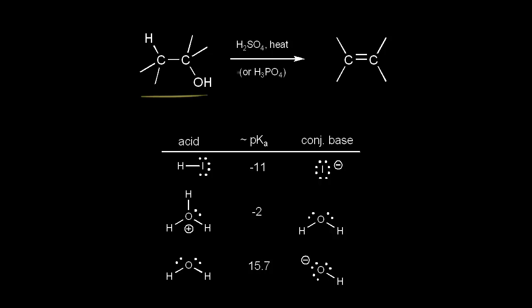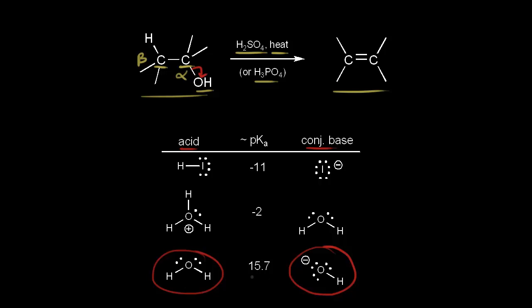Alcohols can also react via an E1 mechanism. The carbon bonded to the OH is the alpha carbon; the carbon next to that is the beta carbon. Reacting an alcohol with sulfuric acid and heating will give an alkene. However, direct loss of OH would form hydroxide as the leaving group, which is a poor leaving group. The hydroxide anion is the conjugate base of water, and water is not a great acid, so hydroxide is not stable and not a great leaving group.